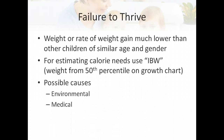Failure to thrive is a condition without strict diagnostic criteria — it's more characteristics. In general, it's either a weight or a rate of weight gain that's much lower than other children of similar age and gender. For estimating calorie needs in infants or children with failure to thrive, generally you use an ideal body weight at the 50th percentile on the growth chart to estimate what we'd expect the child to weigh given their gender and age, and estimate calorie needs based on that.